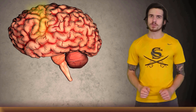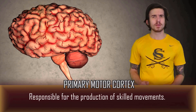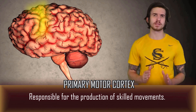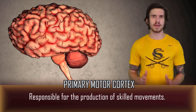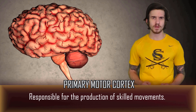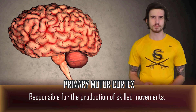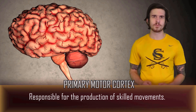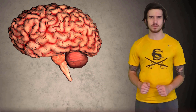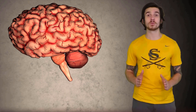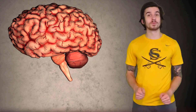The primary motor cortex, or simply the motor cortex, located in the frontal lobe, is responsible for the production of skilled movements. A third of your primary motor cortex is dedicated to facial muscles, while another third is dedicated to hand muscles. This disproportionate representation from these two body areas can be explained by looking at how we as humans can produce a wide variety of hand movements and facial expressions.